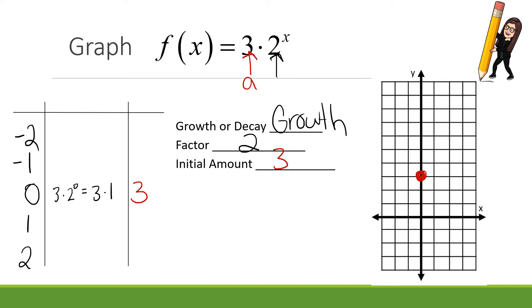Let's jump to 1 next. 3 times 2 to the 1st, which is 3 times 2, which is 6. At 1, we're at 6. Let's go to 2. 3 times 2 squared. 2 squared is 4. 3 times 4 is 12. At 2, we're at 12. That means we're up here.